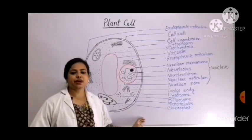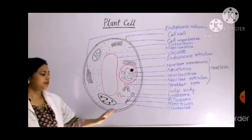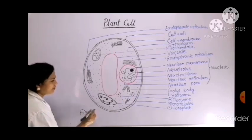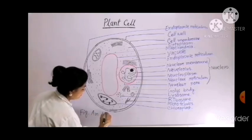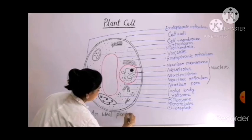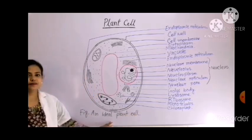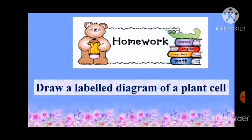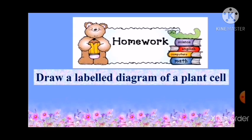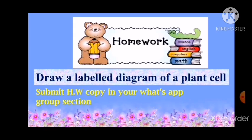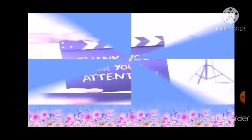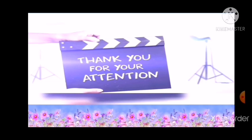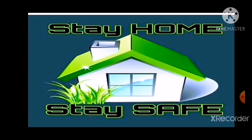As a biology student, you should write the figure name at the bottom. So the figure name is 'An ideal plant cell.' Hope all of you understand today's lecture. If you have any questions, ask your subject teacher. Now I want to give you homework: draw a labelled diagram of a plant cell and submit the homework copy in your WhatsApp group section. Thank you so much for your attention and being with me. For today, that's all from my side. Stay home, stay safe, and save a life. See you in the next class. Until then, Allah peace.